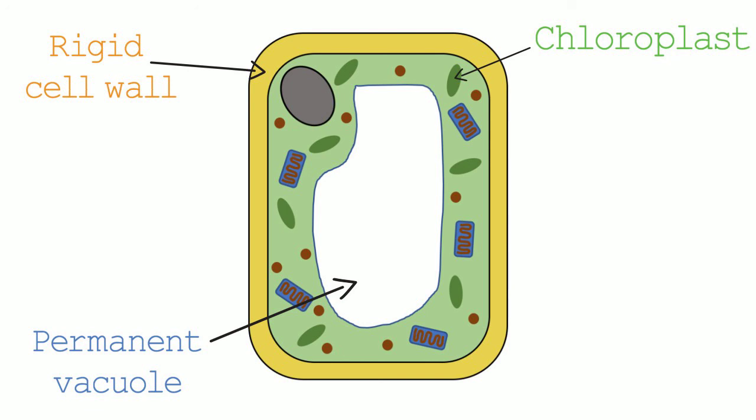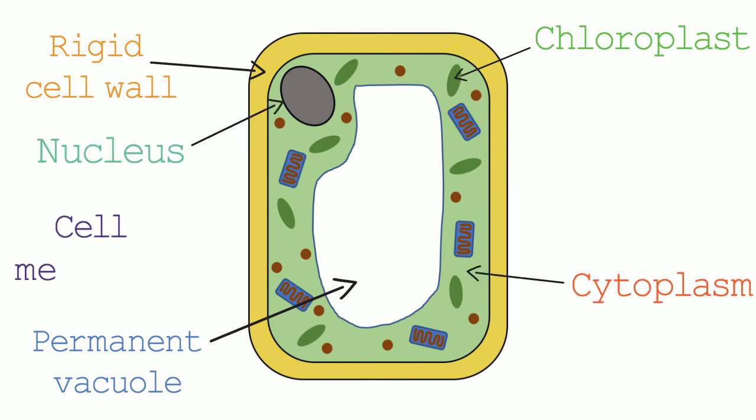So a typical plant cell has these three additional features: a rigid cell wall, chloroplasts, and a permanent vacuole. They also have all of the other components that a human and animal cell has. So they have a nucleus, a cytoplasm, a cell membrane, mitochondria, endoplasmic reticulum, and ribosomes.